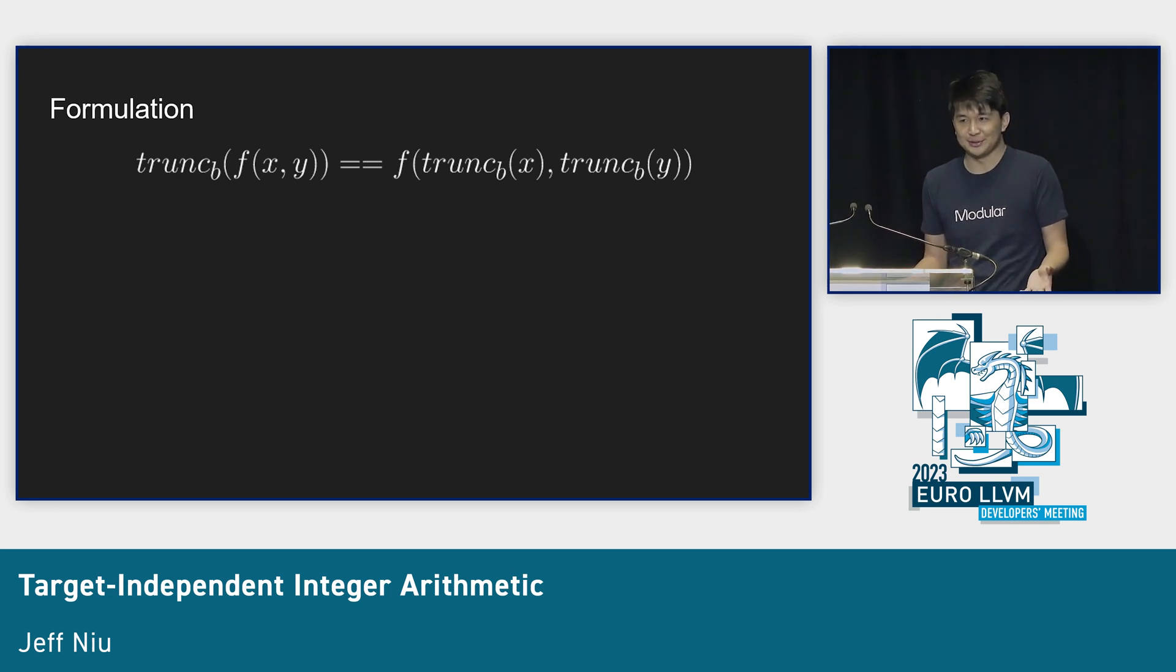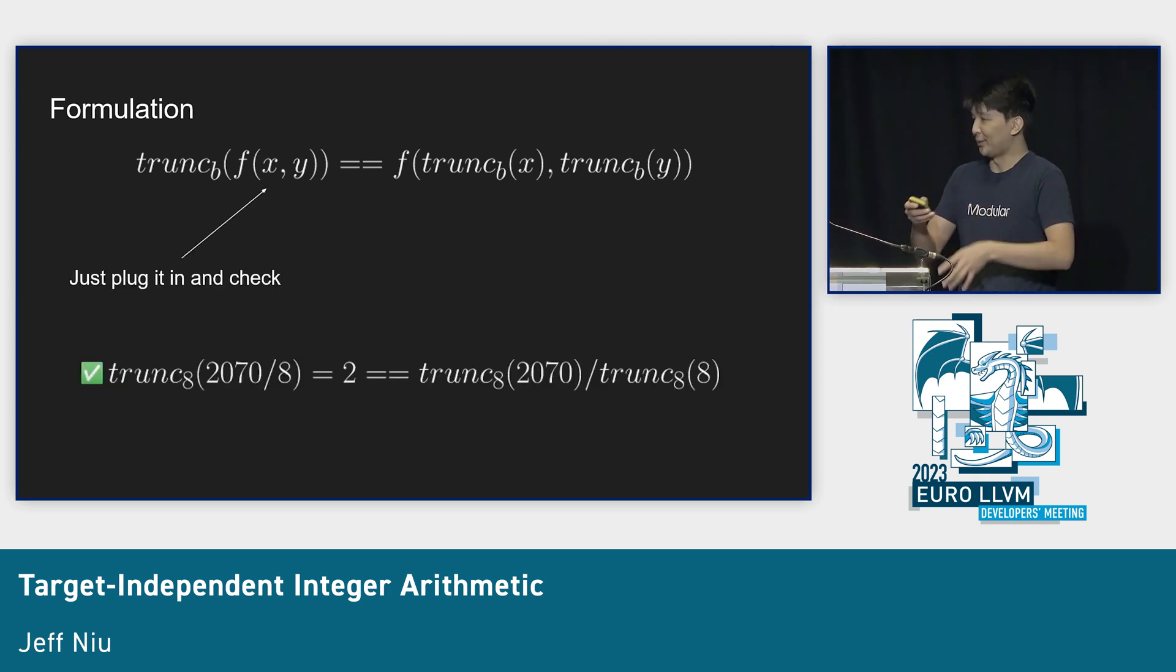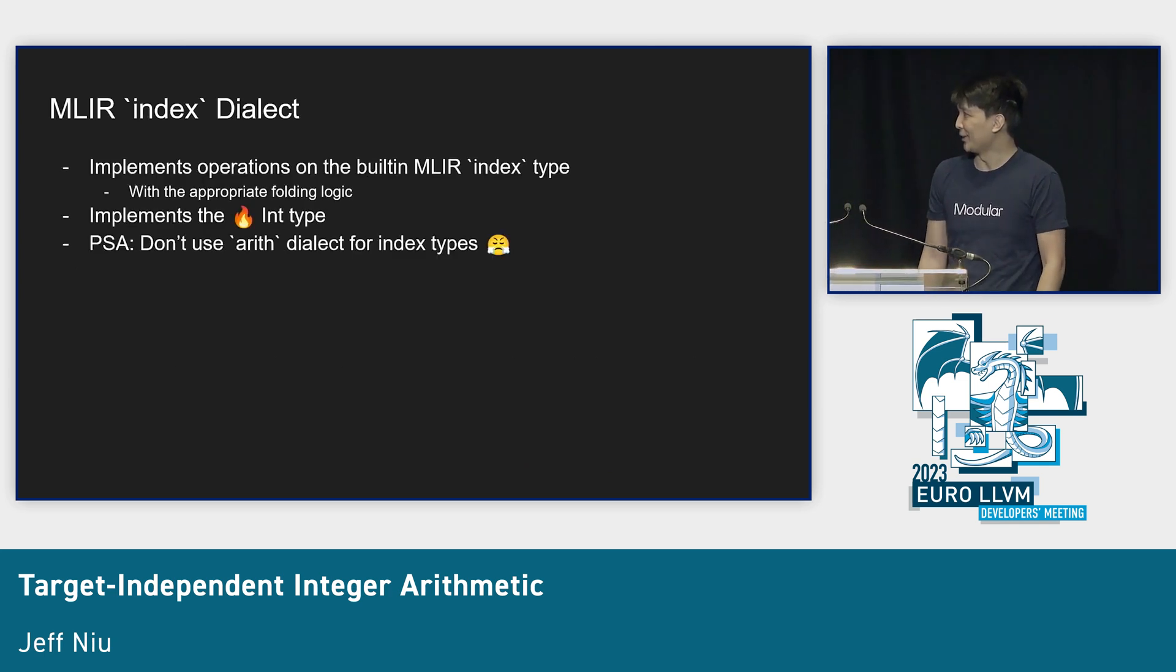But we still want to fold division, like two divided by four. You can derive this equation: if x and y are within this domain, you can fold it. You just plug it in and check. That's the foundation behind the MLIR index dialect.